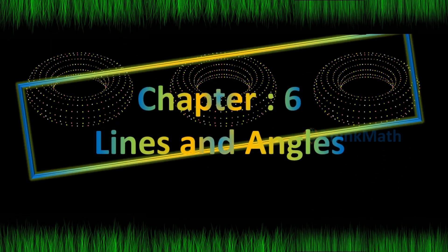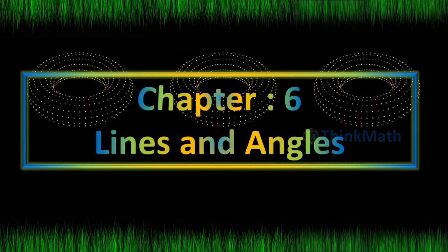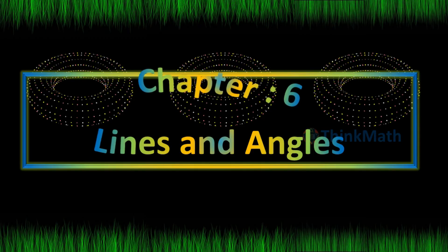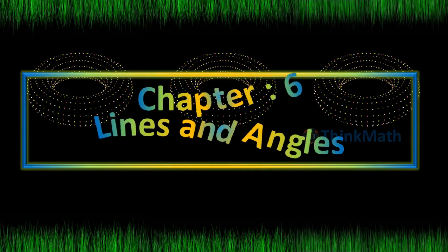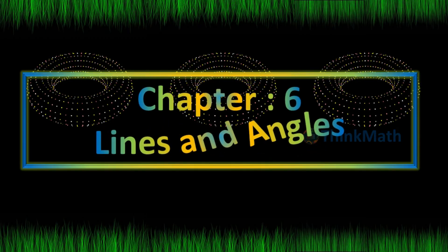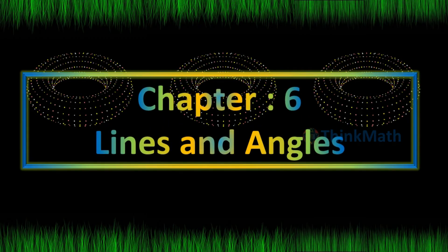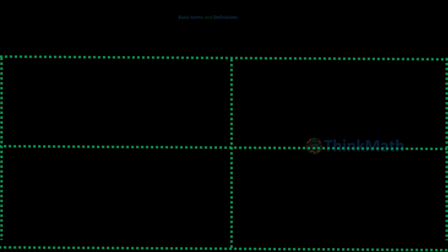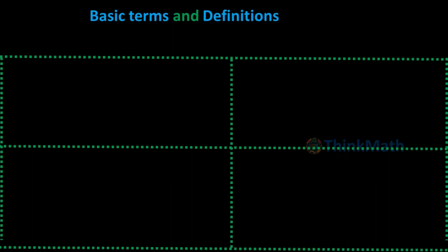Chapter 6: Lines and Angles. Basic Terms and Definitions. Types of Angles.